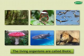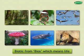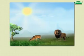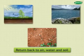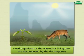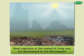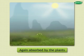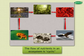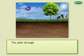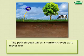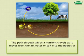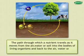Nutrients pass through trophic levels and finally return back to air, water, and soil when dead organisms or the waste of living ones are decomposed by decomposers, which are again absorbed by the plants. Thus, the flow of nutrients in an ecosystem is cyclic. The path through which a nutrient travels as it moves from the air, water, or soil into the bodies of living organisms and back to the air, water, or soil is called a biogeochemical cycle.